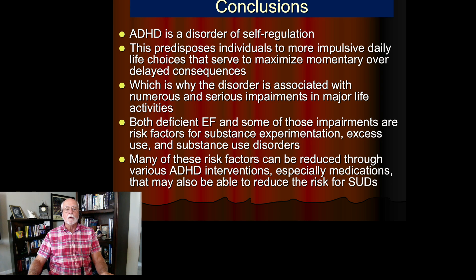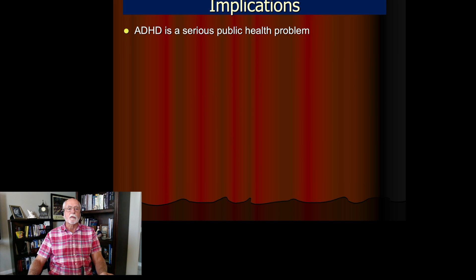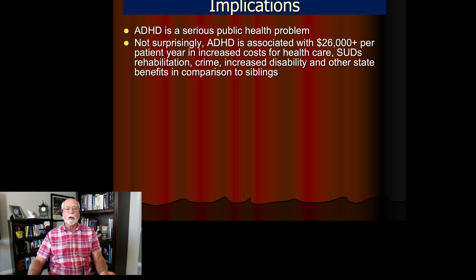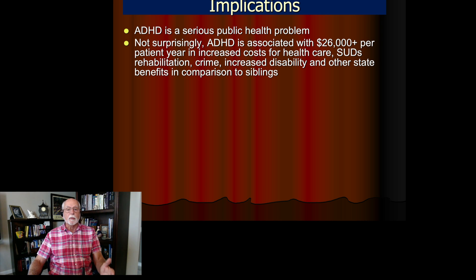Many of the risk factors we saw in part one of this video can be reduced through various ADHD interventions, such as the use of medications along with cognitive behavioral therapy and possibly adult ADHD coaching. ADHD, by implication, is a very serious public health problem — cases with ADHD in adulthood cost about $26,000 more per year in health care costs than typical individuals without ADHD, due to their substance use problems, accidental injuries, risk taking, car accidents, predisposition to antisocial activities, and other disabling conditions.